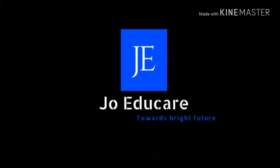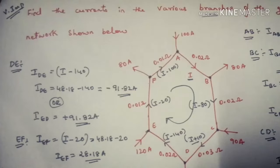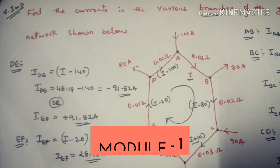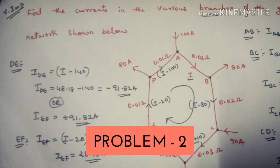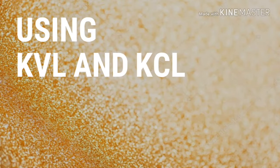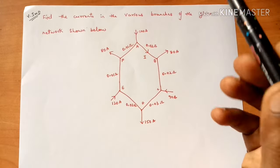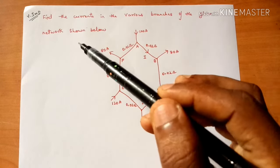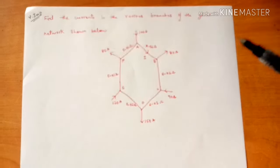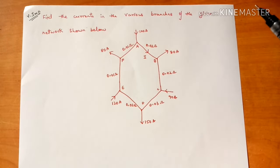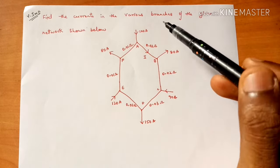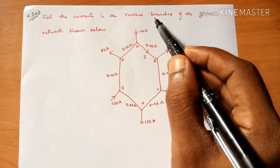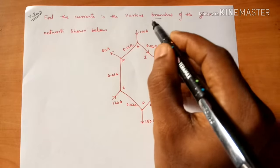Hi friends, welcome back to Jo Educare. Today in this video we are going to discuss how to solve a problem using KVL and KCL. In this problem you have to find the currents in the various branches of the given network shown below.